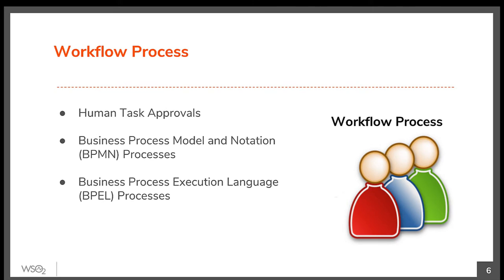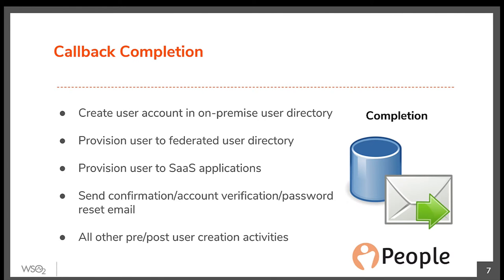The workflow process could be a human task approval, BPMN process, or a BPEL process. When a callback event is received on completion of the workflow, if the workflow was successful, the user creation is performed and the operation is persisted in the system. All other pre- and post-user creation activities are also performed. If the workflow was unsuccessful, the operation is aborted.